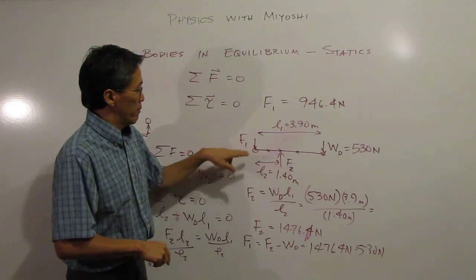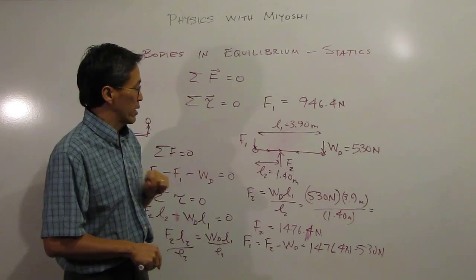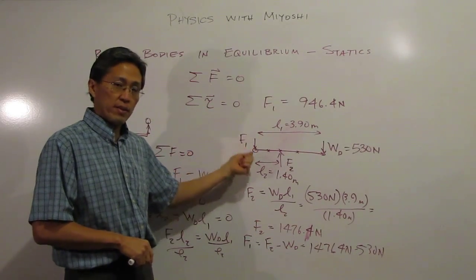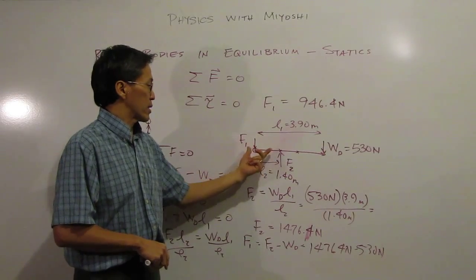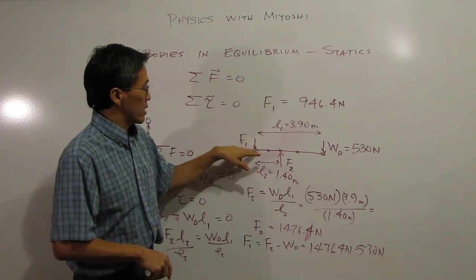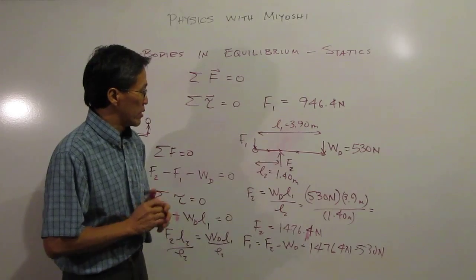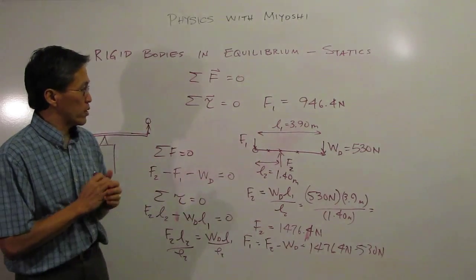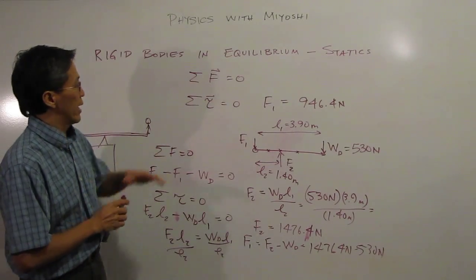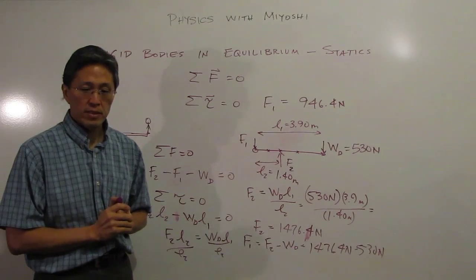Again, when you do this, make sure or try to select something that makes sense for where you're going to rotate around. Make sure when you sum your torques, you sum them from the same point. You don't want to take the rotations around different locations; take them all from the same location. So a very simple example. We'll do another one here in a little bit. Thanks for tuning in for Physics with Miyoshi and finding out a little bit about statics and rigid bodies in equilibrium. See you again next time.